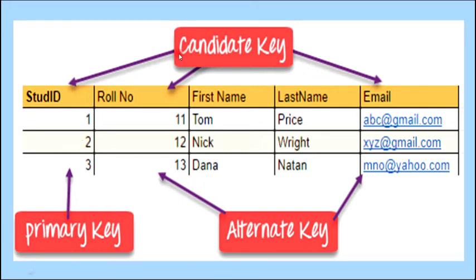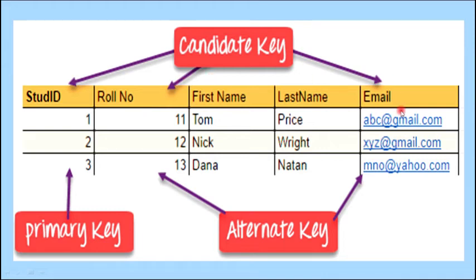Candidate keys have the same properties as the primary key. The alternate key is the candidate key which is not chosen as the primary key. For example, if the three candidate keys are student ID, roll number, and email, and student ID is chosen as the primary key, then roll number and email become the alternate keys. Leaving the primary key, all other candidate keys are alternate keys.